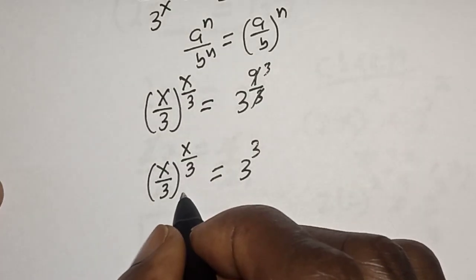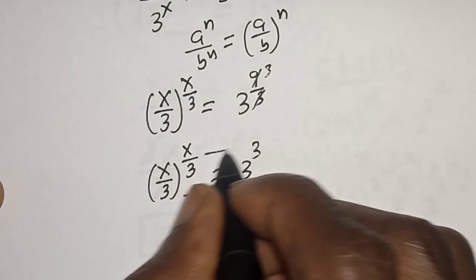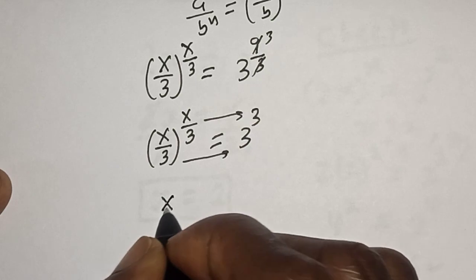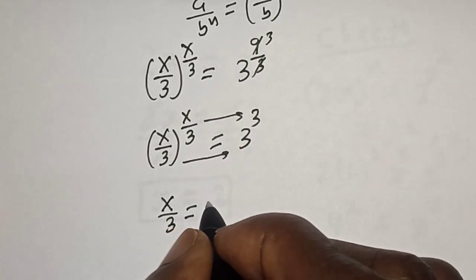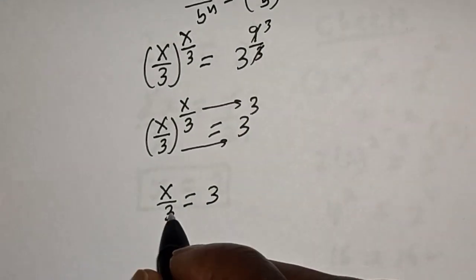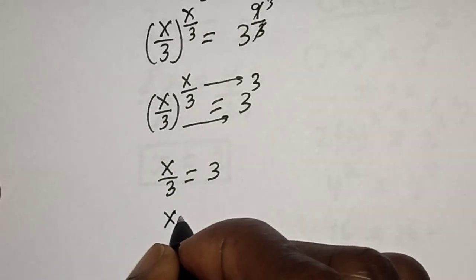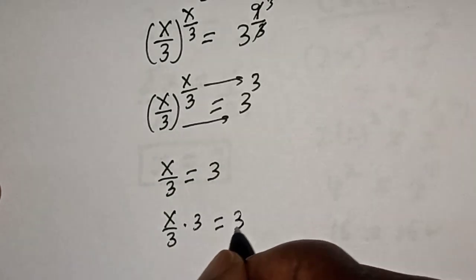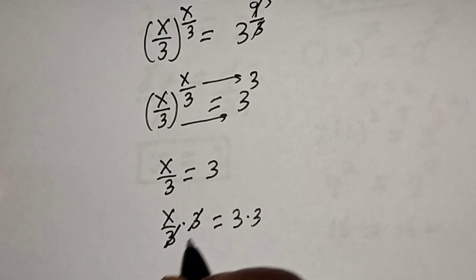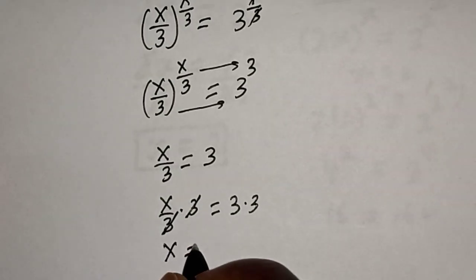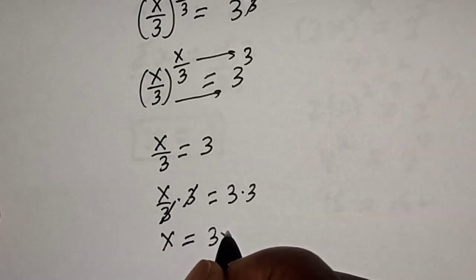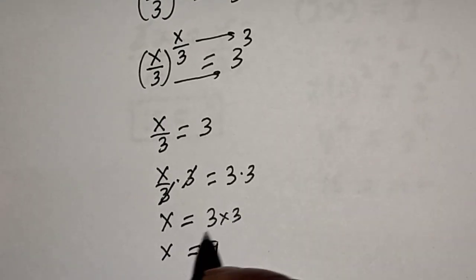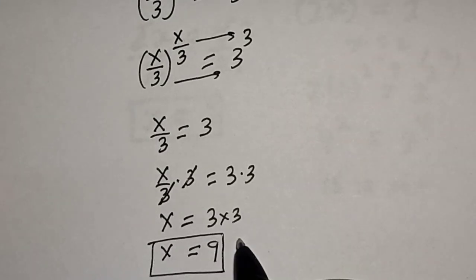By comparing both sides, the base and exponent match, so S over 3 is equal to 3. Multiplying both sides by 3, S is equal to 3 multiplied by 3, which gives S equals 9. This is the final answer.